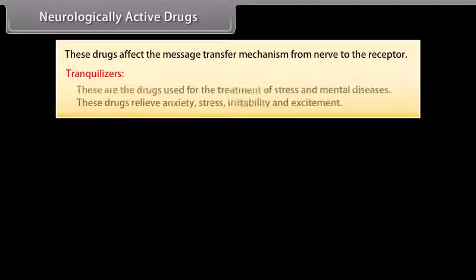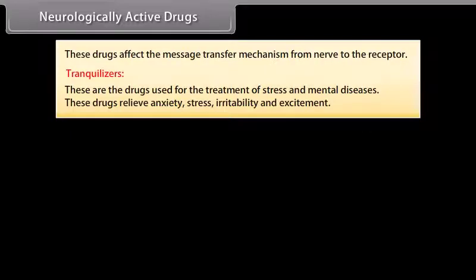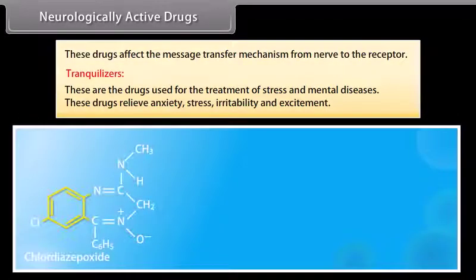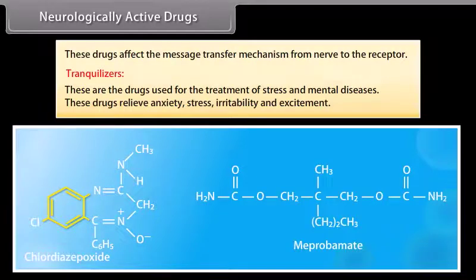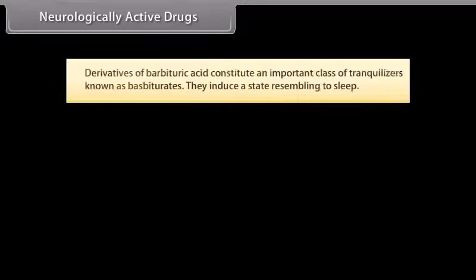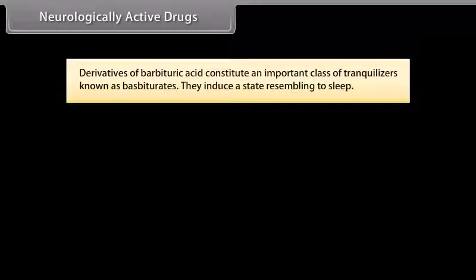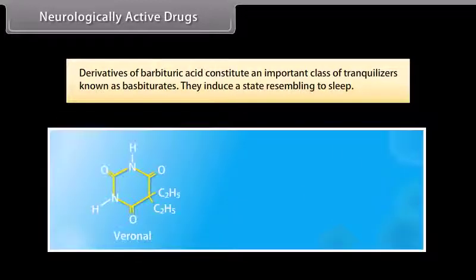Neurologically active drugs: these drugs affect the message transfer mechanism from nerve to the receptor. Tranquilizers: these are the drugs used for the treatment of stress and mental diseases. They relieve anxiety, stress, irritability, and excitement. For example, chlordiazepoxide and meprobamate are mild tranquilizers. Derivatives of barbituric acid constitute an important class of tranquilizers known as barbiturates; they induce a state resembling sleep. For example, Veronal and Luminal.